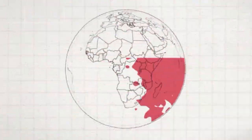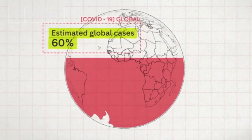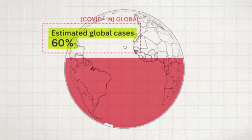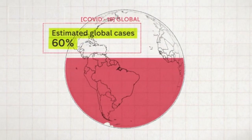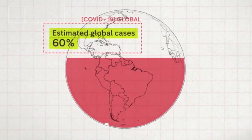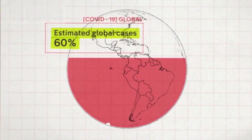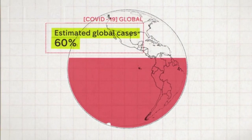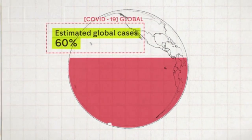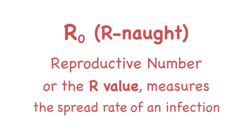Scientific models therefore indicate that if it is not stopped, the Wuhan virus could infect most people on the planet and kill 1% of the infected, which would mean a death toll in the tens of millions. To estimate the spread of an emergent viral infection, scientists strive to determine the virus's reproductive number, known as R-naught, or the R-value.